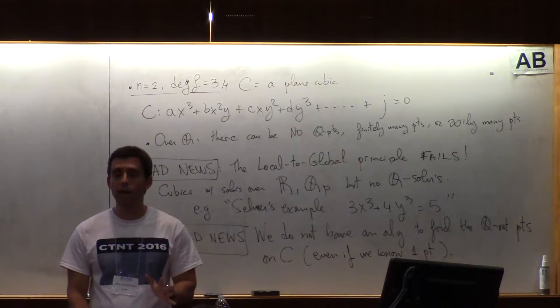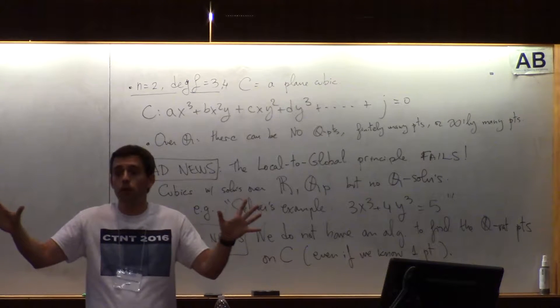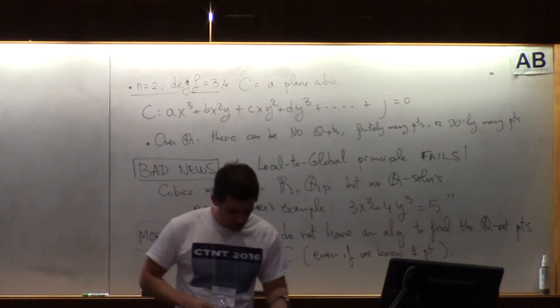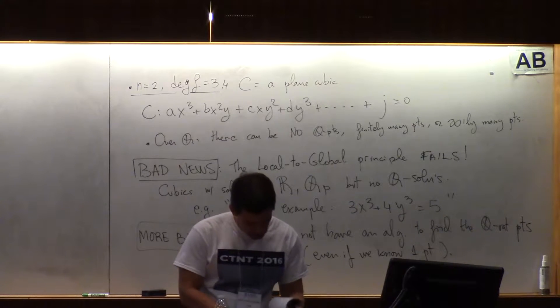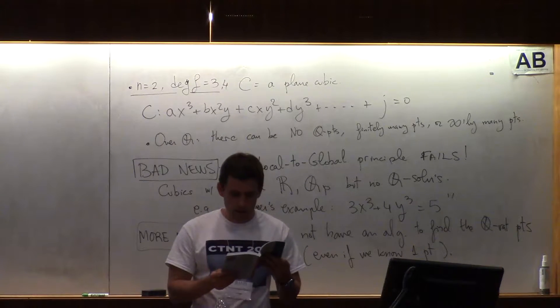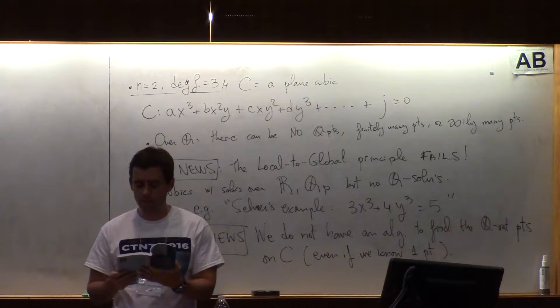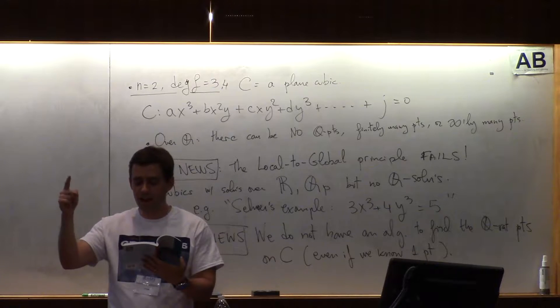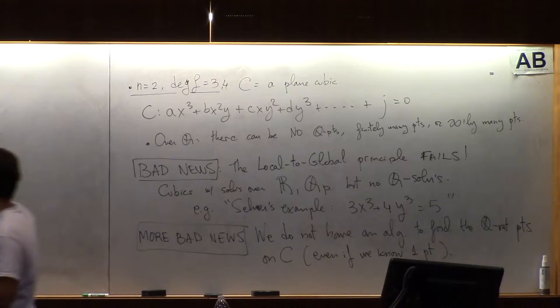So Baker proved that for the integral points at least, for the integral points there is a bound. So if you give me an elliptic curve, I can give you a bound. Now the bound is something like, this is section 2.3, it's something like the maximum value of x or y in absolute value is e to the 10 to the 6 times, in the exponent, the maximum of a or b to the 10 to the 6.